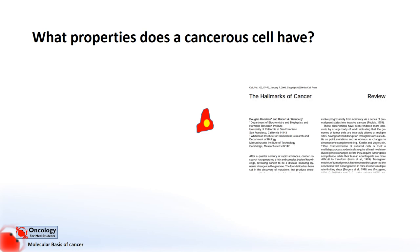In the year 2000, Douglas Hanahan and Robert Weinberg had a very well-known article published that tried to answer that question, reducing the vast complexity of cancer into six key properties, or hallmarks as they called them. This paper proved to be very popular as one of the most cited articles in Cell Journal. A more recent version of the hallmarks of cancer was published in 2011 with the addition of four hallmarks, making ten in total. But for now we'll keep it simple and focus on the first six.